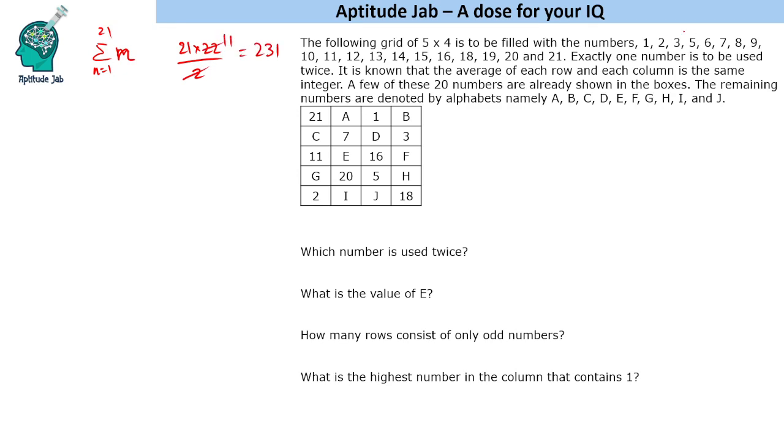Have you noticed 4 is missing and 17 is missing? So you subtract 21 and you get 210.